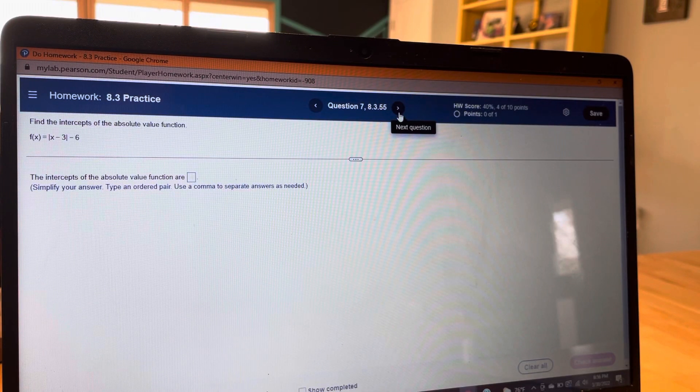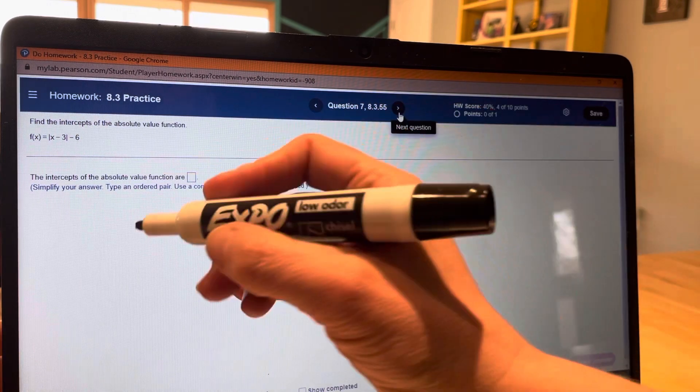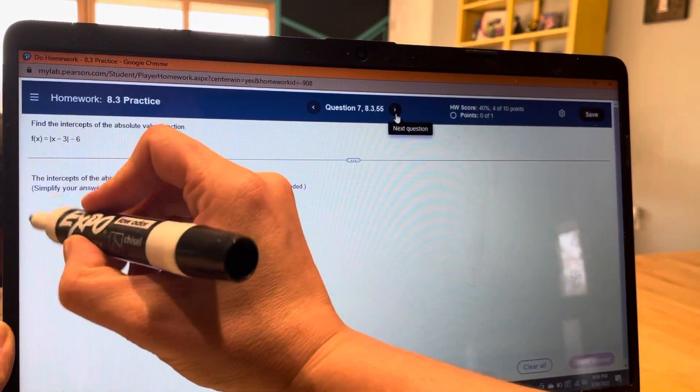Alright, next we're finding the intercepts, x and y intercepts, of this absolute value function. So let's start by finding the y intercept.